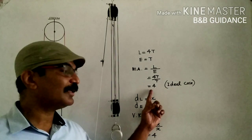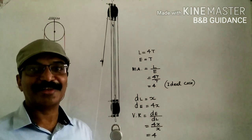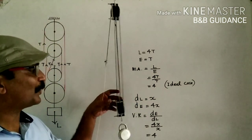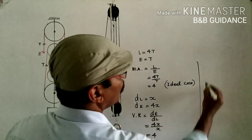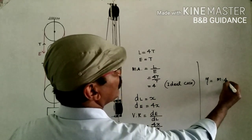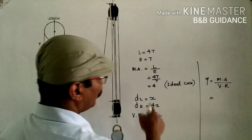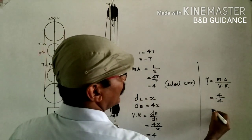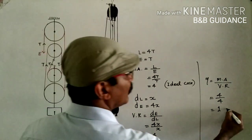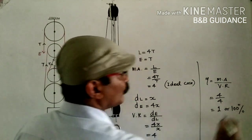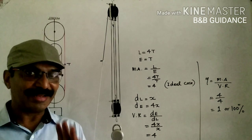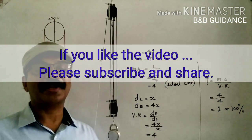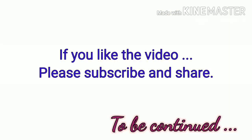In the ideal case, mechanical advantage also equals the number of strands supporting the load. Practically, mechanical advantage will be less than the number of strands. Efficiency = mechanical advantage / velocity ratio = 4 / 4 = 1, or 100% in the ideal case. In the actual case, efficiency will be less than 100%.